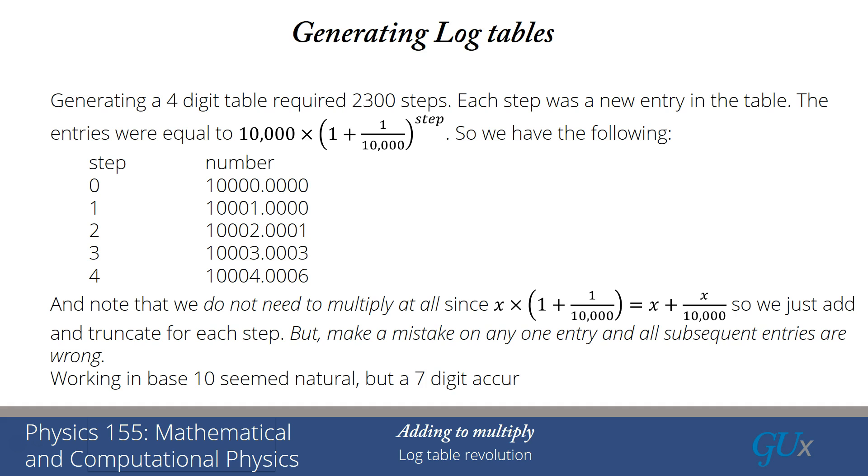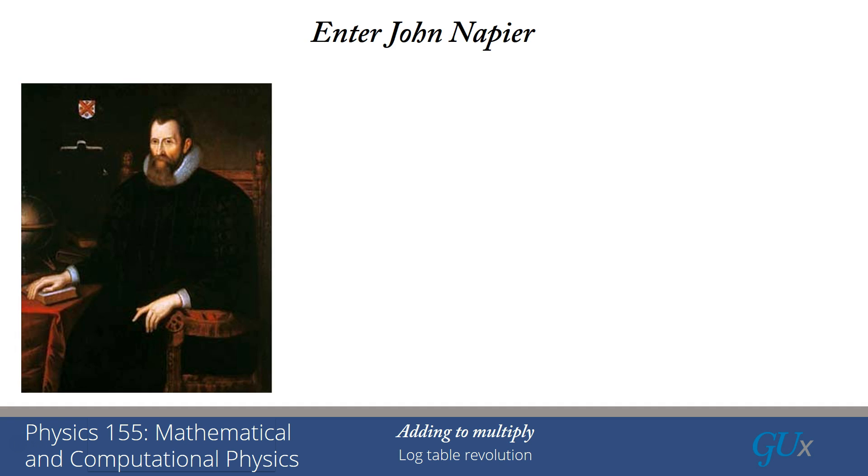So if we work in base 10, that's the most natural thing. But to do that for a seven-digit accuracy table requires 23 million steps. And no one in their right mind would imagine trying to take the time to do that. In fact, it would probably take 50 years for one person to generate such a table. And if they made a mistake in year 23, all of the rest of that work is worthless. So this became a real problem for people who were trying to generate these tables.